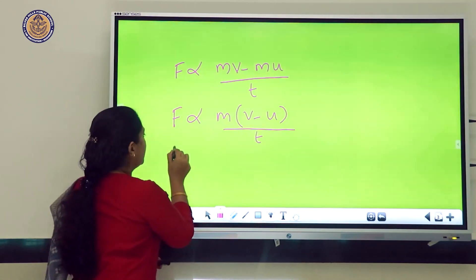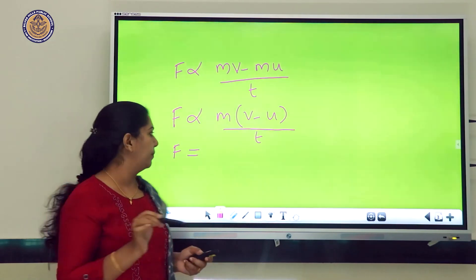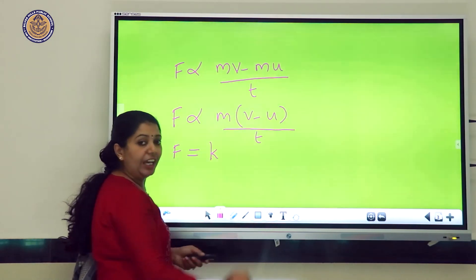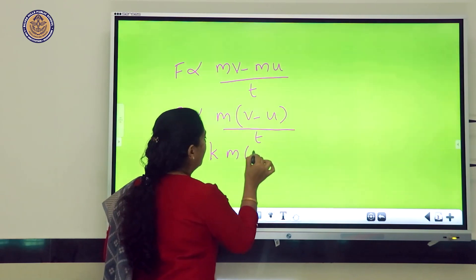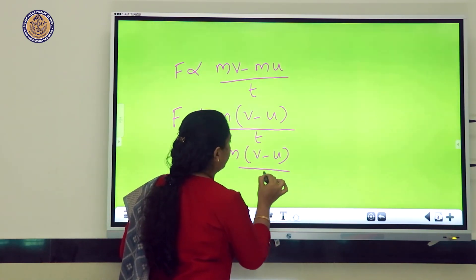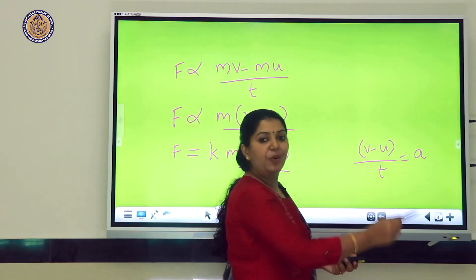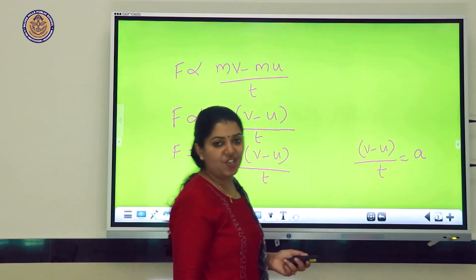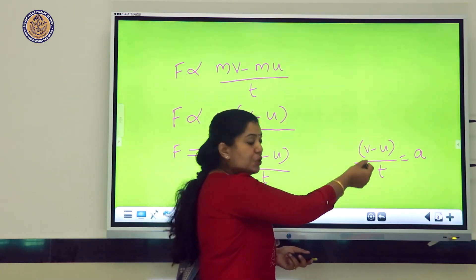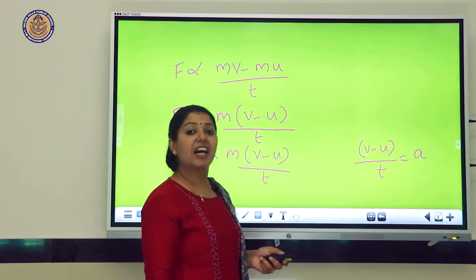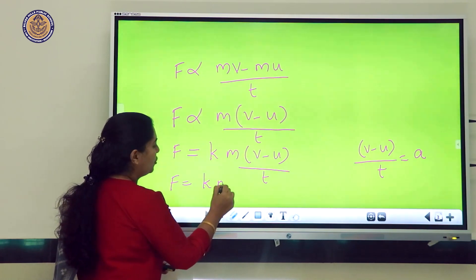We change the proportionality sign to an equal sign by multiplying by a proportionality constant k, giving F = k × M × (V − U) / T. From the previous chapter, we know that (V − U) / T equals acceleration A. So we write A in place of (V − U) / T, giving F = k × M × A.